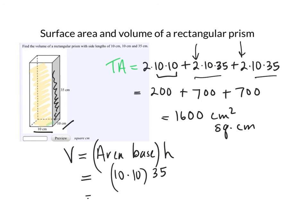And 100 times 35 is 3,500. This is volume, so we say centimeters cubed or cubic centimeters.